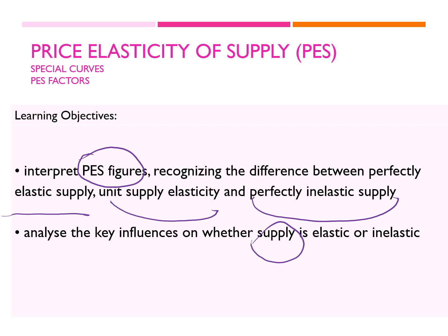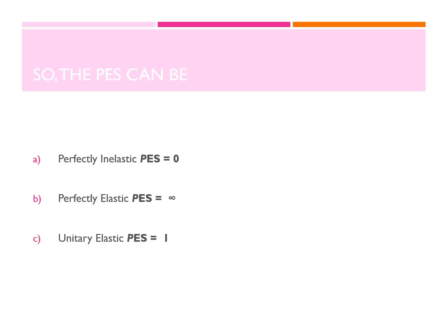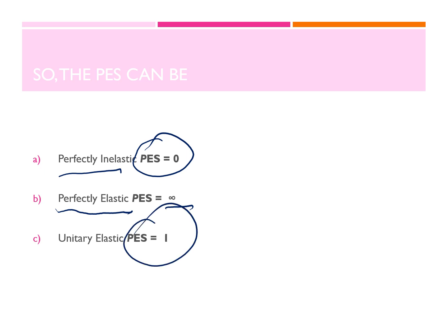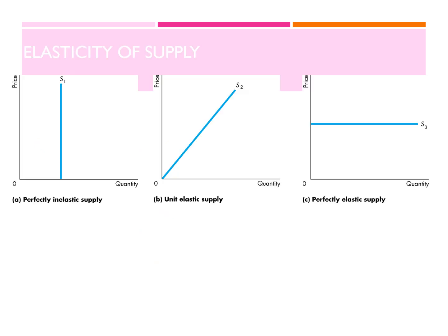For the special curves: if my PES is equal to zero, I would call it perfectly inelastic. If it's equal to infinity, it would be called perfectly elastic. If it is equal to one, it's a unitary elastic, so the percentage change of quantity is equal to the percentage change of price.